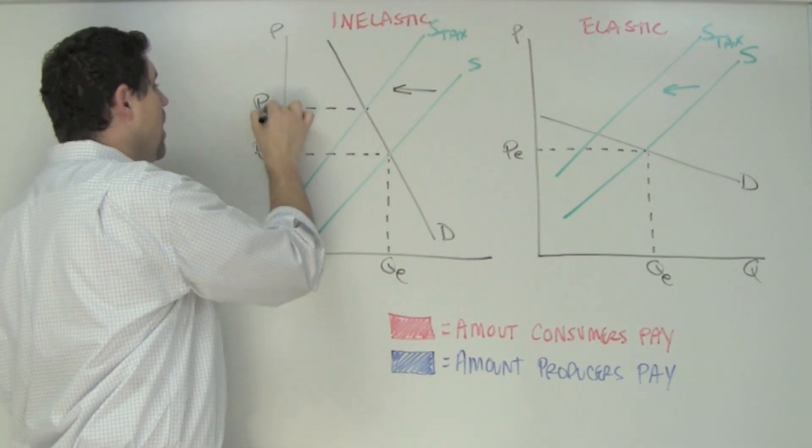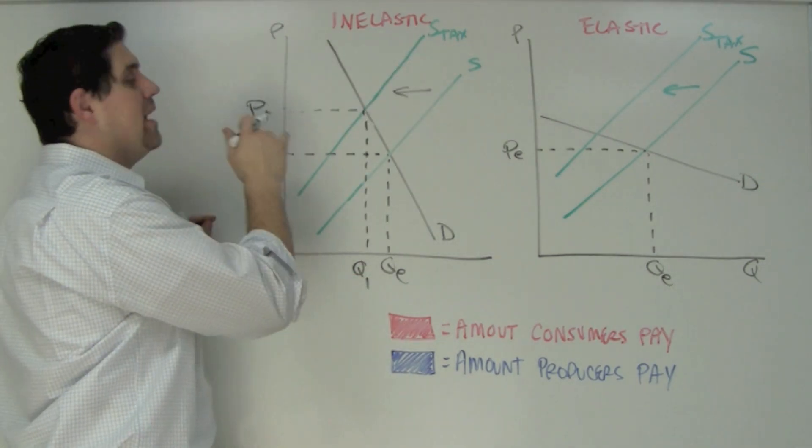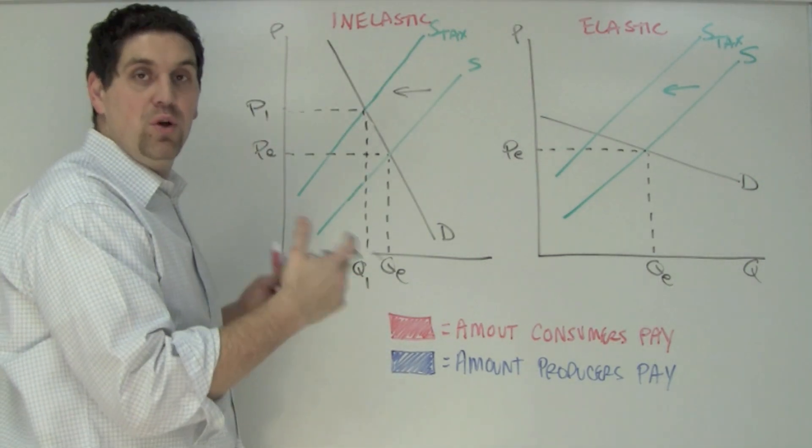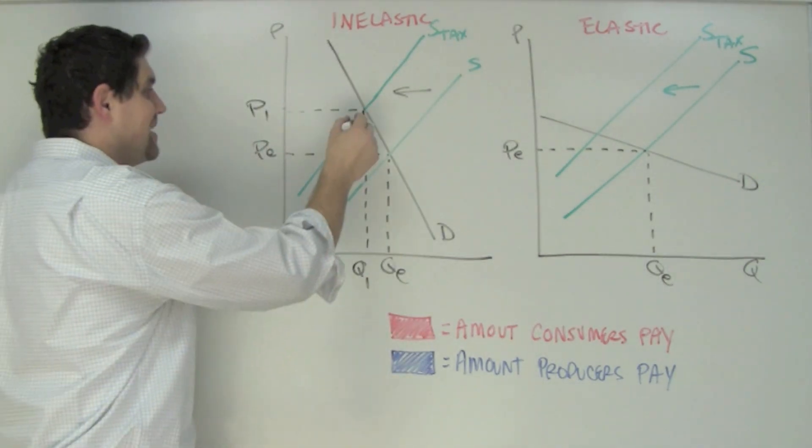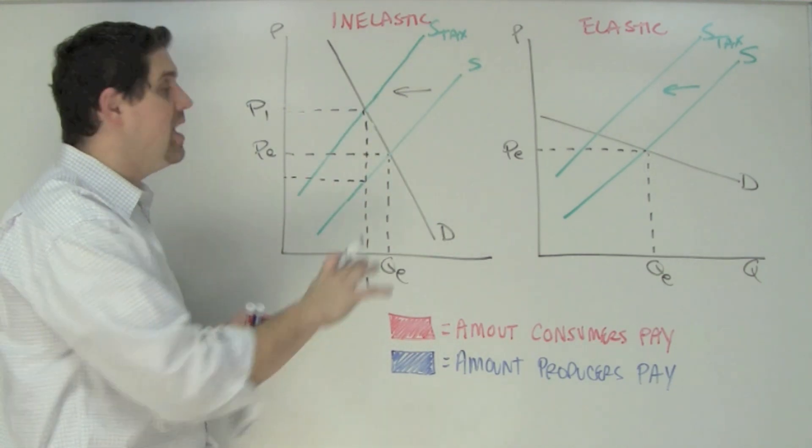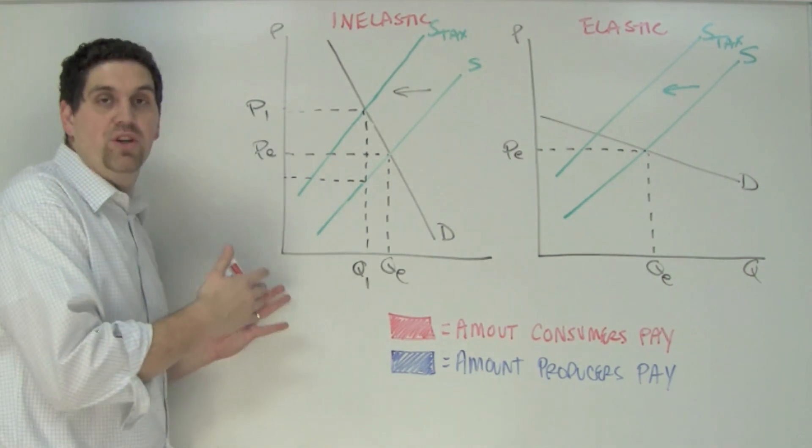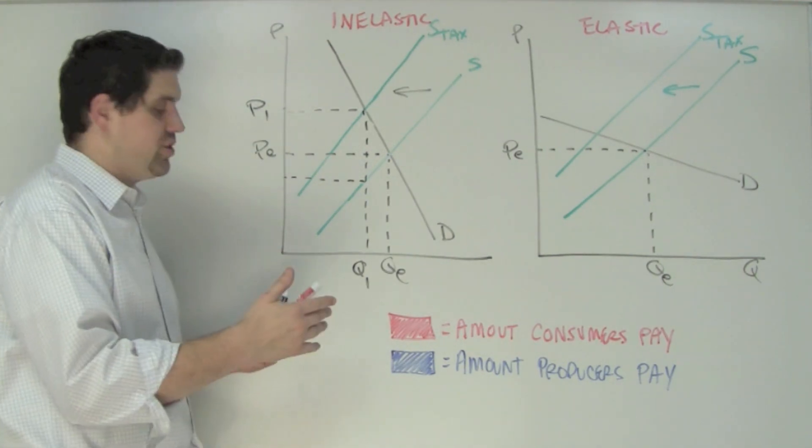There's going to be a new price, P1, and a new quantity, Q1. The new price represents the price that consumers pay, but the producers don't get to keep all that. There's a tax wedge in between both of them because the vertical distance between the supply curves is the amount of tax per unit. The end result is that consumers pay a certain portion of this tax and producers pay the other portion.